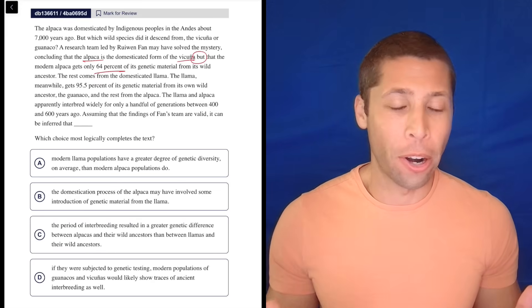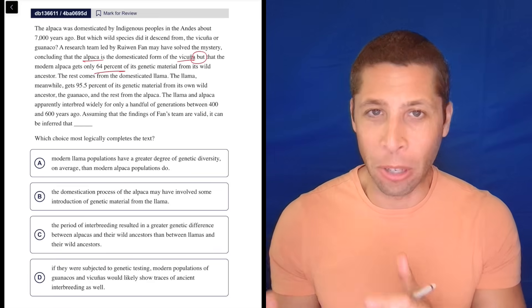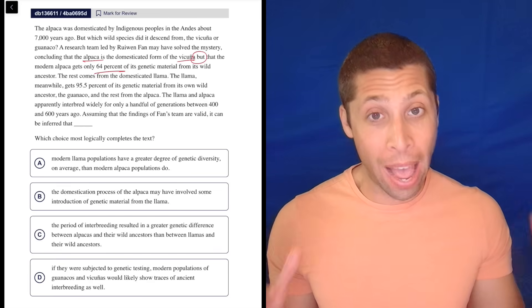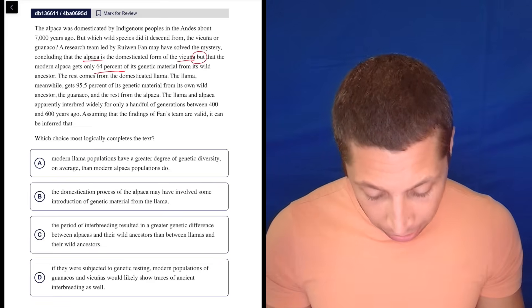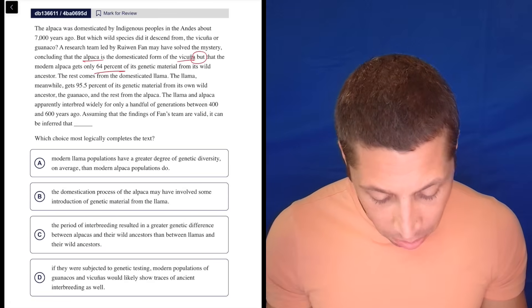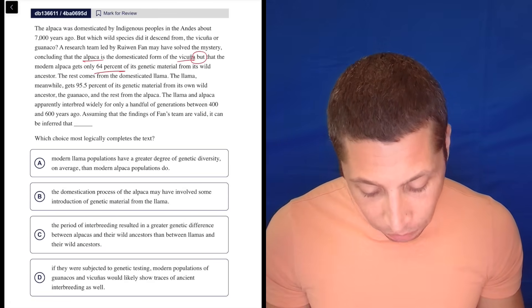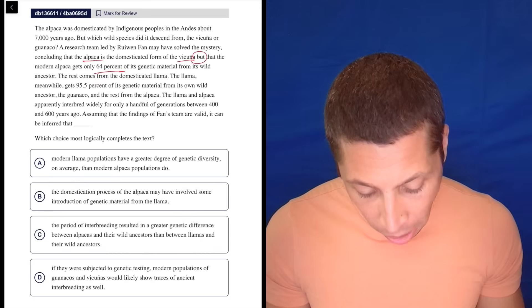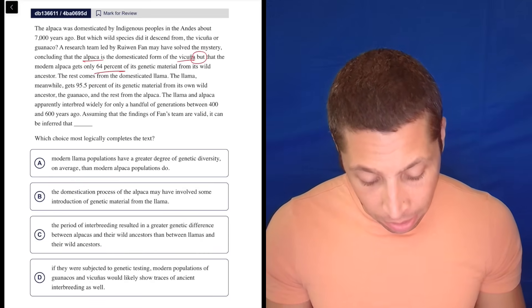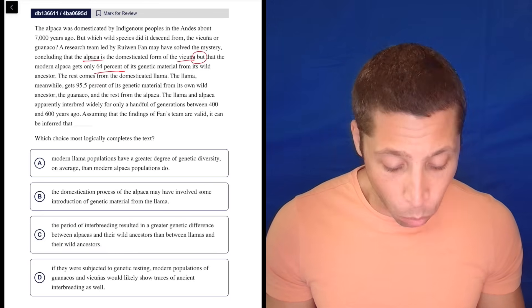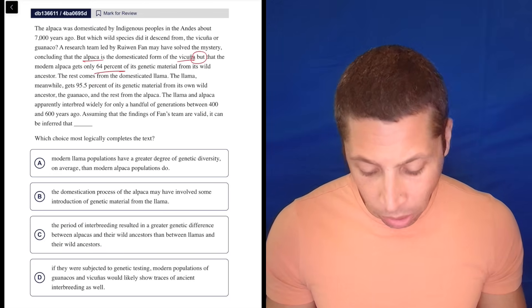To me, that's a good signal that they're like, yes, the answer is that it's from the vicuña, but the most important thing from this passage is that it's only partly from that, and there's more to the story. Continuing, the rest comes from the domesticated llama. The llama, meanwhile, gets 95.5% of its genetic material from its own wild ancestor, the huenaco, and the rest from the alpaca.